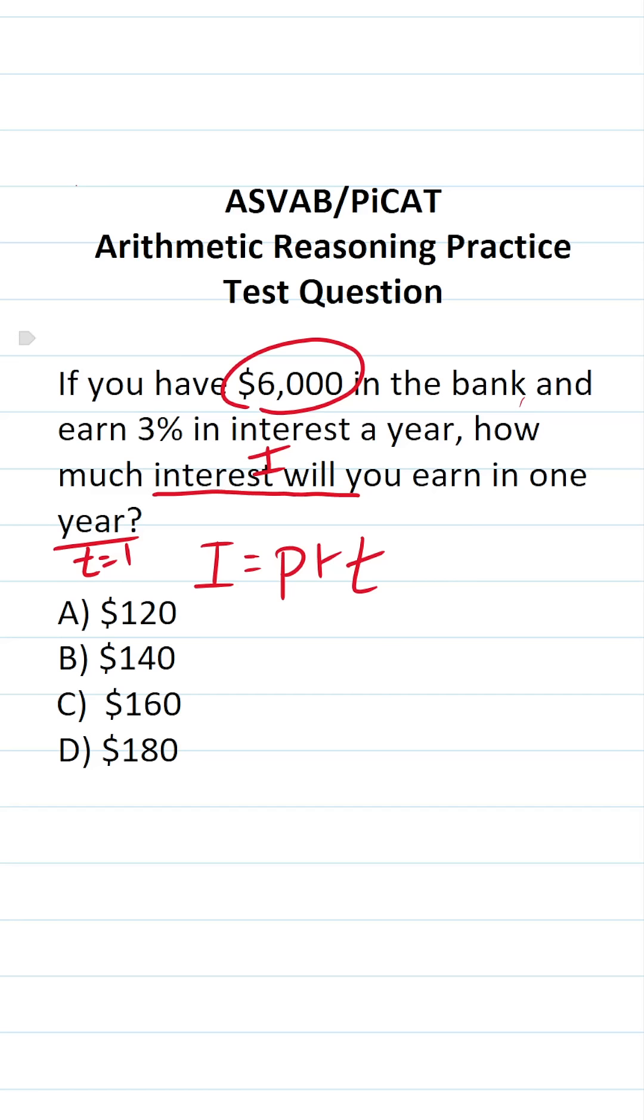We have a principal of $6,000 in the bank and our interest rate is 3%, which is 0.03 in decimal form. Let's plug these values in and solve.